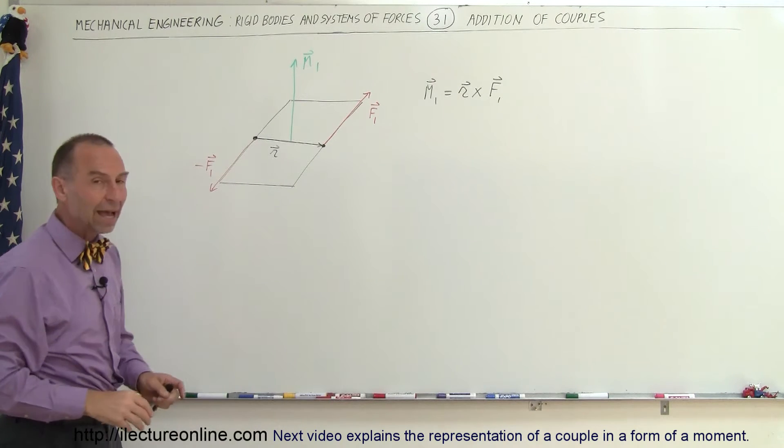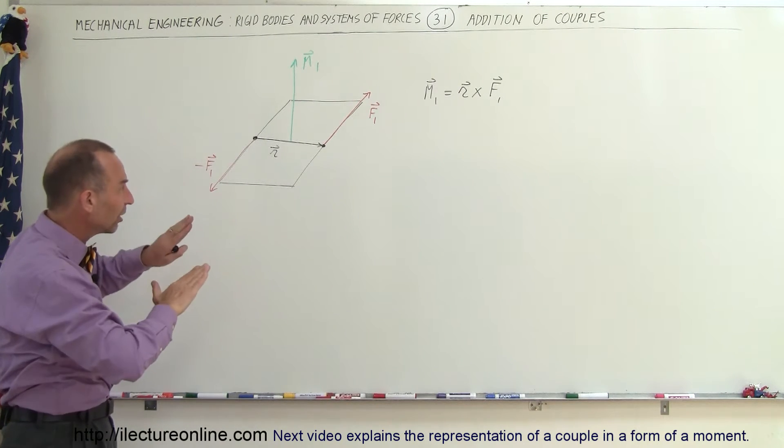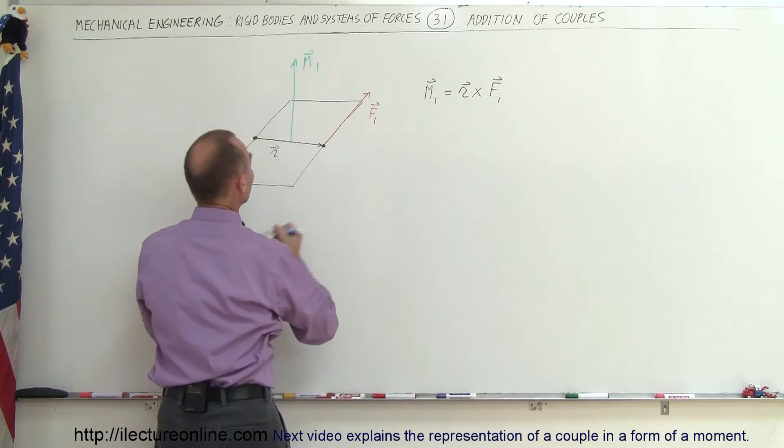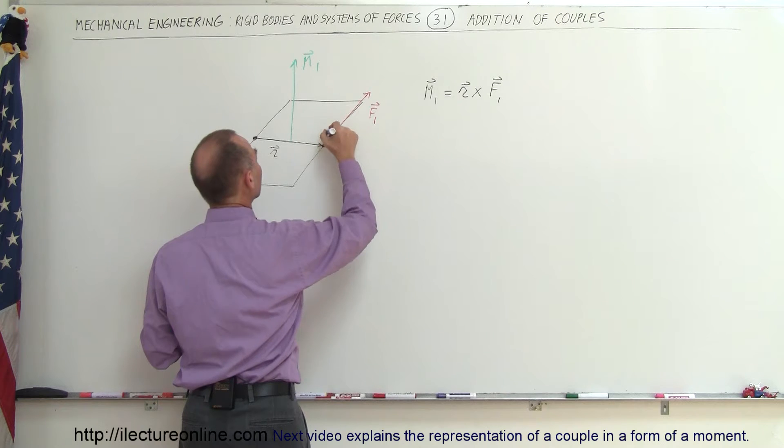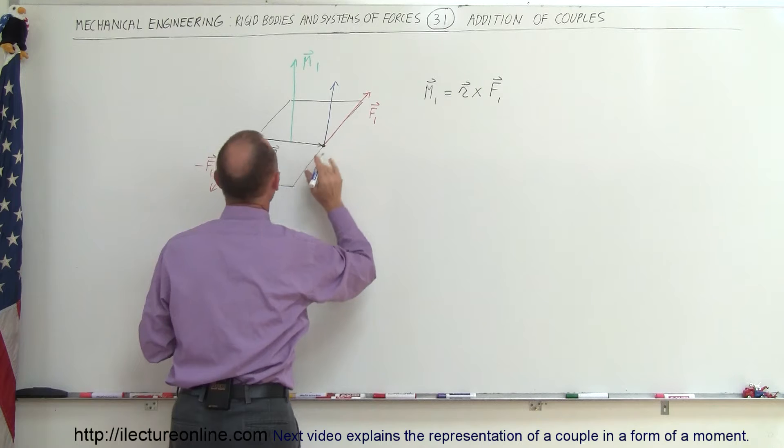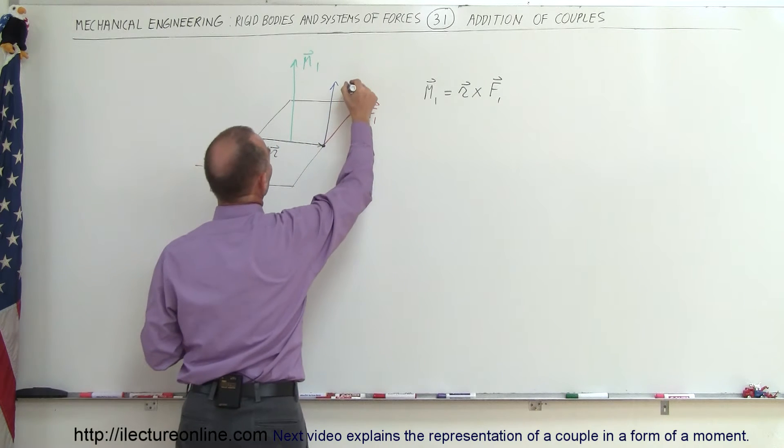Now what happens when we have two different vectors still along the same plane at a slightly different angle? So let's draw those. So let's draw a vector F2. Notice it's still in the same plane as F1. And so let's call this vector F2.